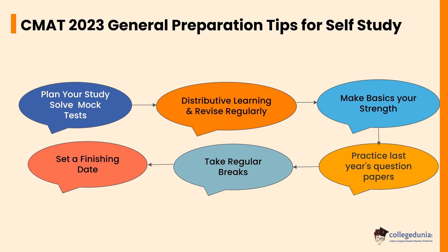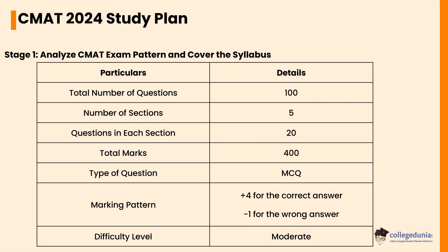Let's check the CMAT 2024 study plan. Stage one: analyze the CMAT exam pattern and cover the syllabus. The total number of questions will be 100, with five sections of 20 questions each. The total marks will be 400. Questions will be MCQ type — plus four marks for a correct answer, minus one for a wrong answer. The difficulty level will be moderate.